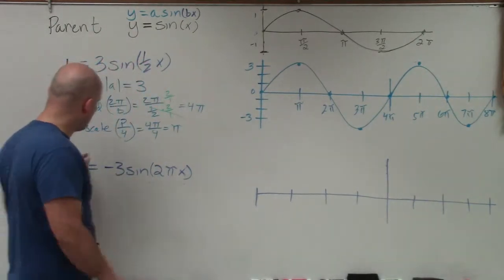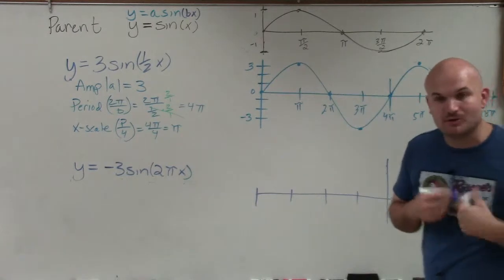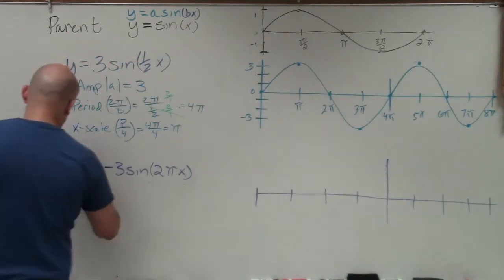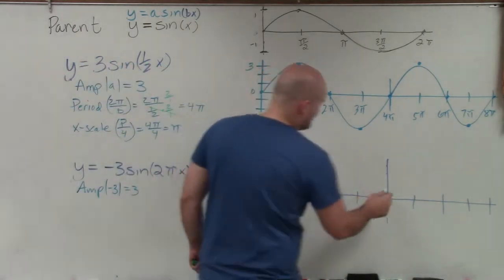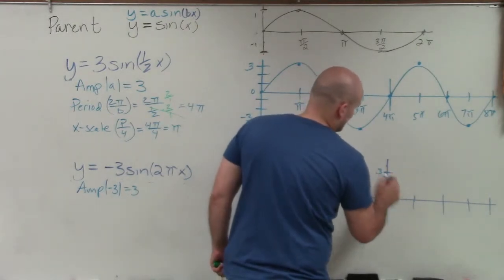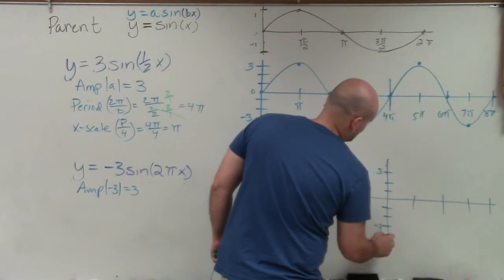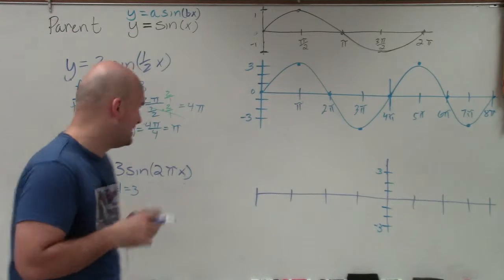Now let's go and take a look at this graph, where we have y equals negative 3 sine of 2 pi x. Now again, remember, amplitude is the absolute value of a. So just because it's negative, that is not going to affect my amplitude. My amplitude is still going to go up 3: 1, 2, 3, and down 3: 1, 2, 3. So it's still going to have the same amplitude. However, the negative is going to do a reflection, which I'll do at the very, very end.